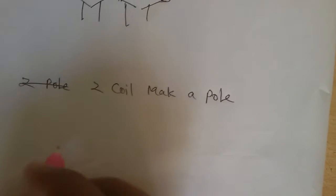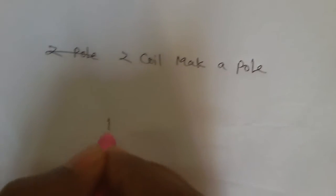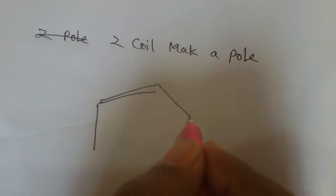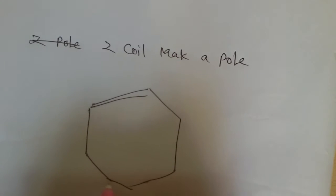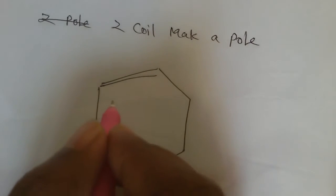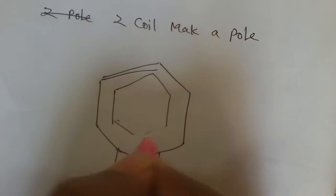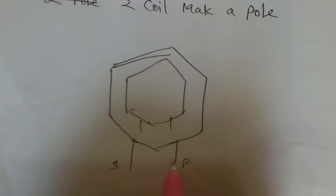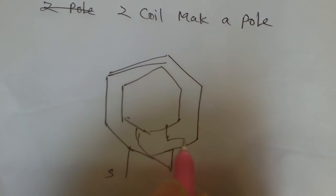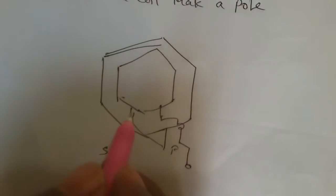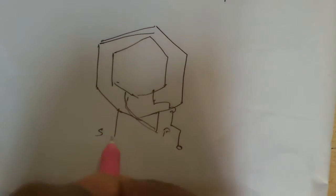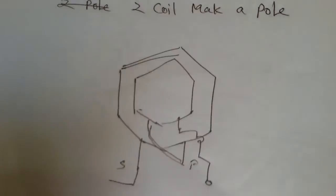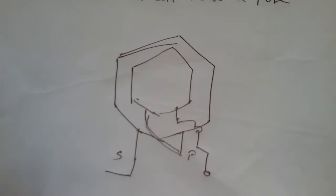Here 2 coils we connect this type. If we connect here start, this connect, and this here connect, this coil group, this 2 coils make a group, this group make a pole.